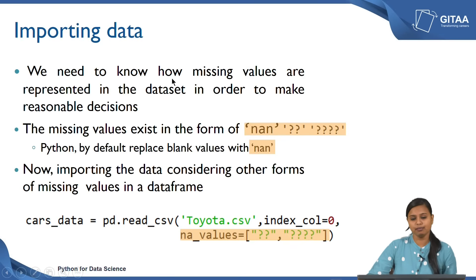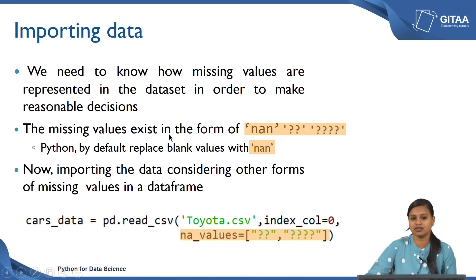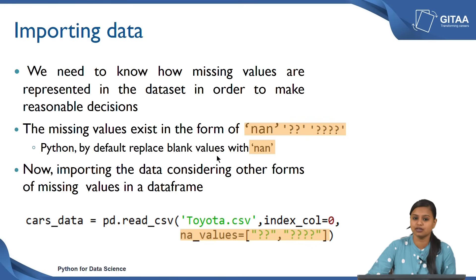Before importing, we need to know how missing values are represented in the dataset in order to make reasonable decisions. You need to be sure whether missing values appear as blanks, zeros, question marks, or special characters. In our data frame, missing values exist as 'None' for blank values, double question marks, and four question marks. We do not have to worry about blank values because Python by default replaces blank values with NaN. Now we know the other forms of missing values present in our data frame.